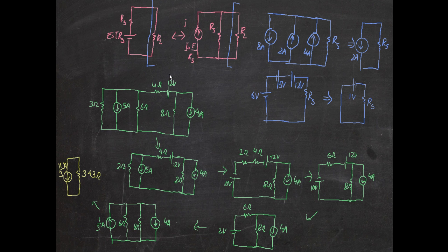It depends upon what would make your circuit more simplified and easier for you to calculate and find out whatever you are told to find. When a circuit is given with a resistor and voltage source in this format, then you can convert it — ignore the blue part for now.